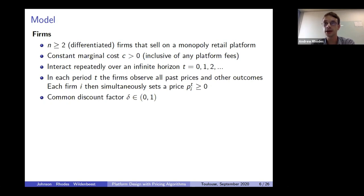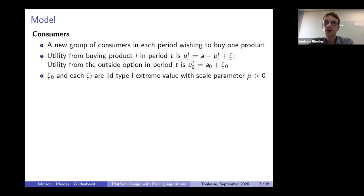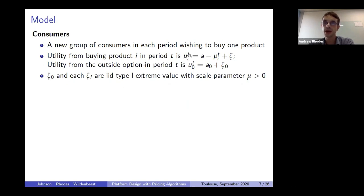On the consumer side, in each period we have a unit mass of consumers who enter the market, stay for one period, and then exit replaced by a new unit mass. Consumers wish to buy at most one product. If a consumer buys product i in period T, she gets payoff U_iT equal to A — the quality of the product minus the price — plus a taste shock zeta_i reflecting product differentiation. If she takes the outside option, she gets utility U_0T equal to constant A_0 plus a preference shock zeta_0.